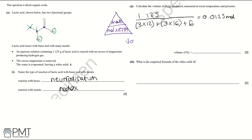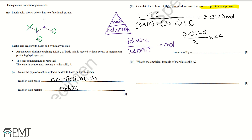Next, calculate the volume of hydrogen produced using: volume = moles × molar volume (24,000 cm³ at RTP). We divide the moles by 2 because there are twice the number of moles of lactic acid compared to hydrogen. So: (0.0125 ÷ 2) × 24,000 = 150 cm³. The first mark is for correctly calculating moles, and the second for calculating the volume of hydrogen gas.